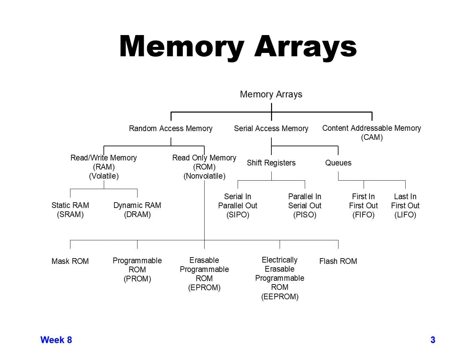This slide shows how there are many different types of memory arrays. Memory arrays cover a broad variety of different logical functions. The three main high-level categories are random access memory, serial access memory, and content addressable memory. For the most part today we'll be going through static SRAM, some various different types of shift registers, and some read-only memory types.